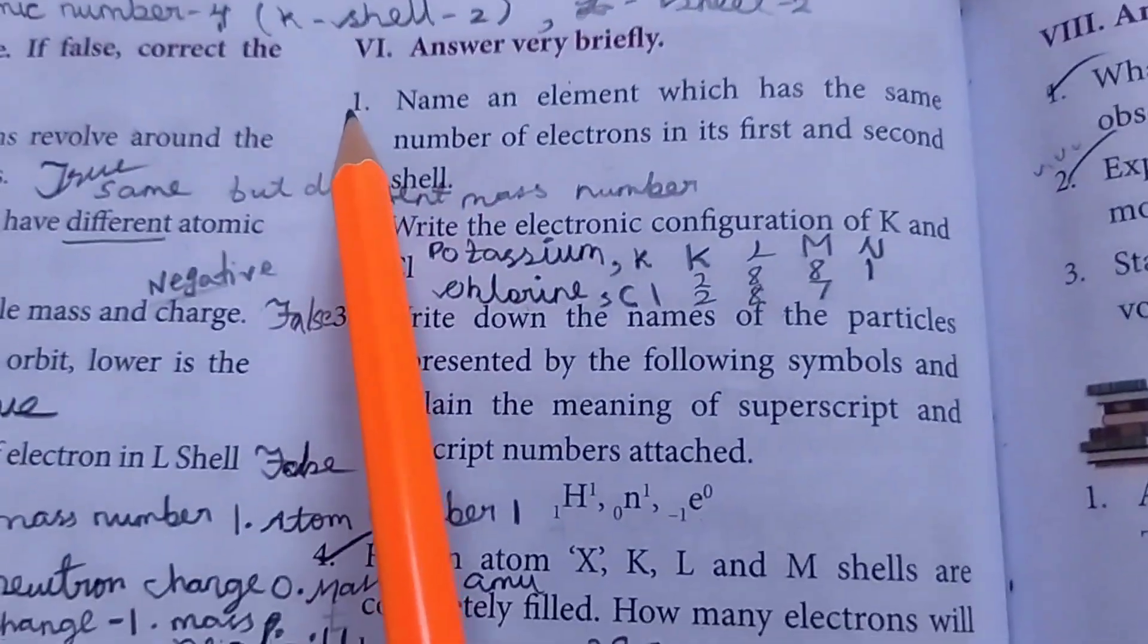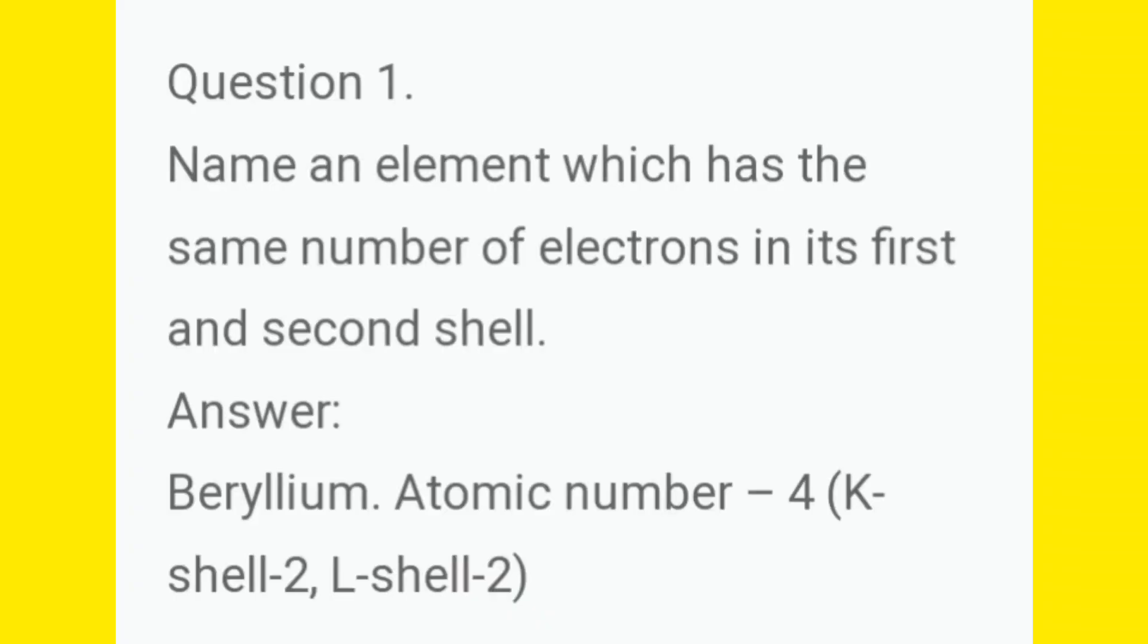Next is sixth roman letter. First question. Name an element which has the same number of electrons in its first and second shell. Answer. Beryllium. Atomic number 4. K shell 2, L shell 2.